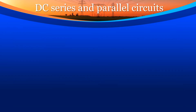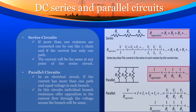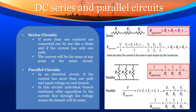DC series and parallel circuits. Series circuits: if more than one resistor are connected one by one like a chain and the current has only one path, the current will be the same at any point of the series circuit. Parallel circuits: in an electrical circuit, if the current has more than one path, there is equal voltage in each branch. In these circuits, individual branch resistance opposes the current flow, while the voltage across each branch remains the same.